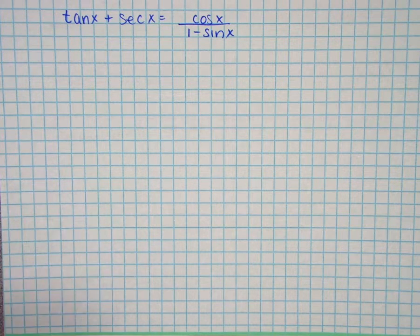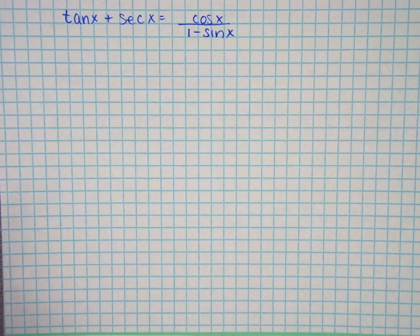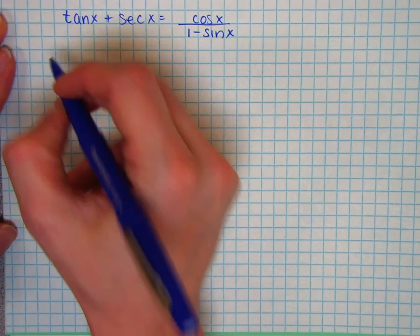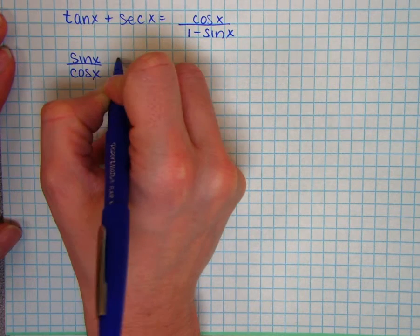Okay, let's prove this identity. I'm going to start on the left-hand side because my left-hand side has tangent and secant, whereas the right-hand side is in terms of sine and cosine. So the first thing I'll do is rewrite the left-hand side in terms of sine and cosine.